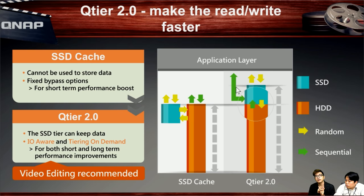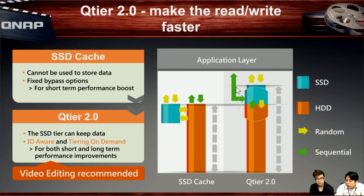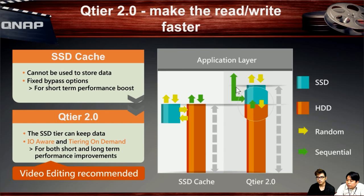With QTier, all SSD storage is used to store data. All data accesses the SSD first, then the NAS automatically transfers it to the hard disk when needed — no performance compromise. This provides fast speeds while protecting your data files inside the NAS.